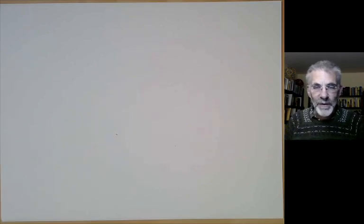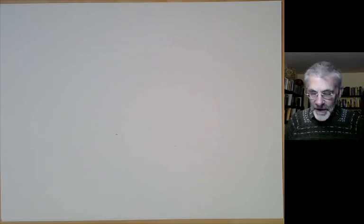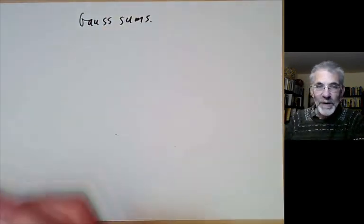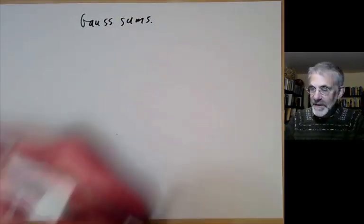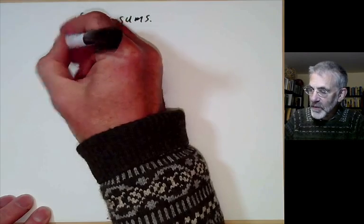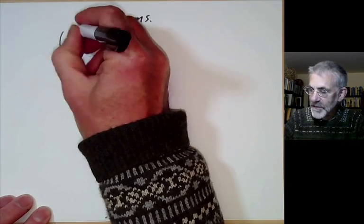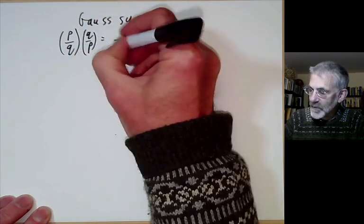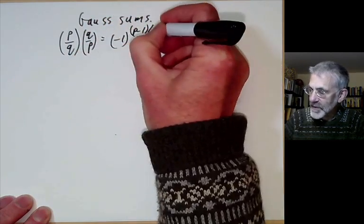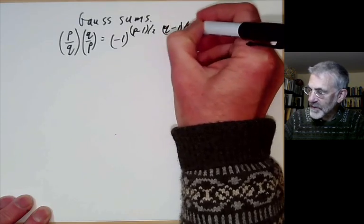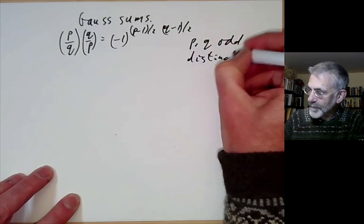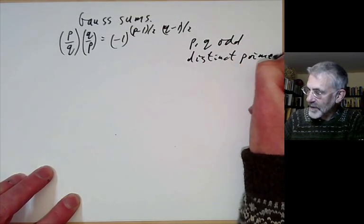This lecture is part of Berkeley Math 115, an introductory undergraduate course on number theory, and will be about Gauss sums. More precisely, we'll be talking about Gauss sums and how to use them to prove the law of quadratic reciprocity, which says (p/q)(q/p) equals minus 1 to the (p−1)/2 times (q−1)/2, for p and q odd distinct positive primes.